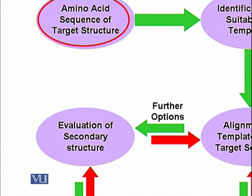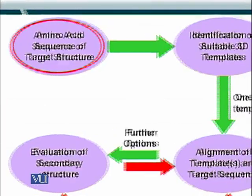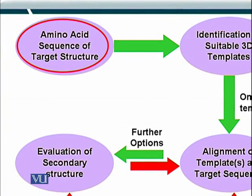Let's take a look at these seven steps in a flowchart. You begin with the amino acid sequence of the target structure and then identify suitable 3D templates — that is, the template proteins. Remember, the template proteins have their sequence and structure both known, while the target does not have its structure known and you are trying to predict it.